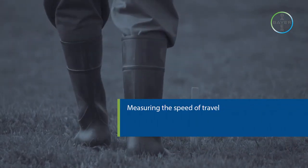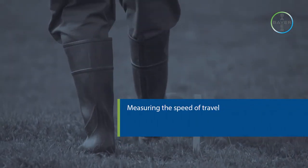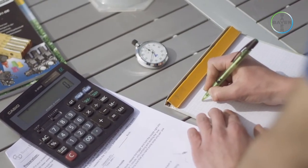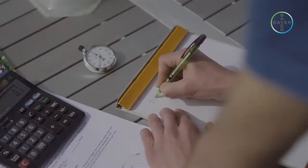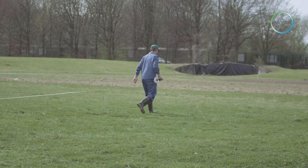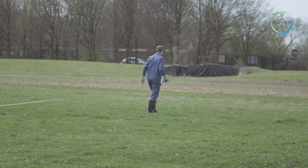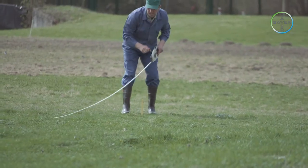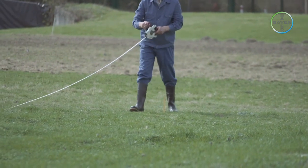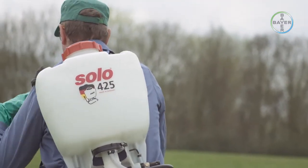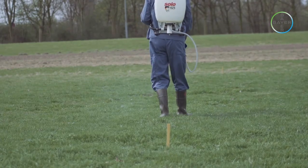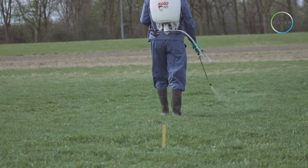Measuring the speed of travel. To measure the sprayer output in liters per hectare, first we need to know our speed of travel. First we need to measure and mark a suitable distance of exactly 20 meters. Assess walking speed. Put the knapsack on your back and start pumping.